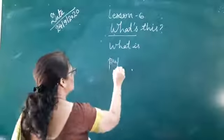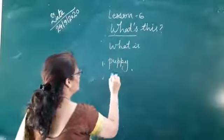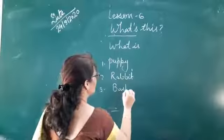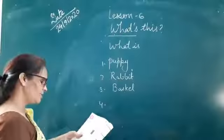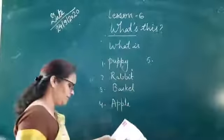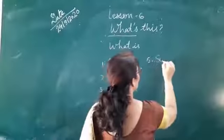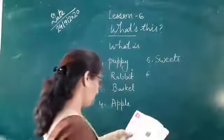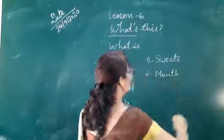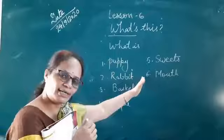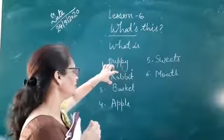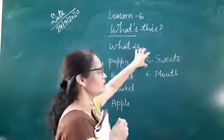Underline word puppy. Then number two is rabbit. Number three is basket. These are new words to all of you, so you have to learn the spellings. Apple. Then number five is sweets, s w e e t s. And mouth. These six spellings, firstly you will underline in your book and then you will write these six words in your copy. Puppy, rabbit, basket, apple, sweets and mouth.